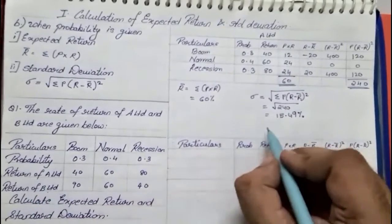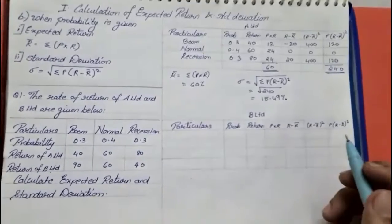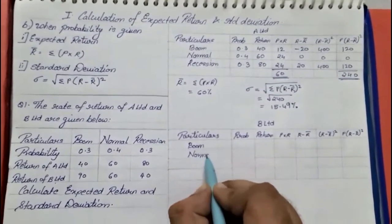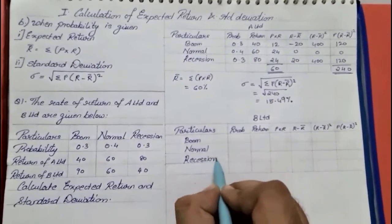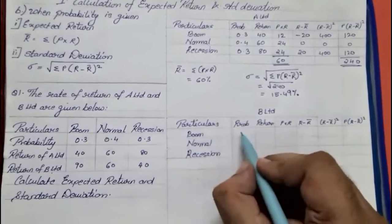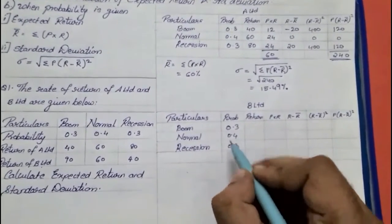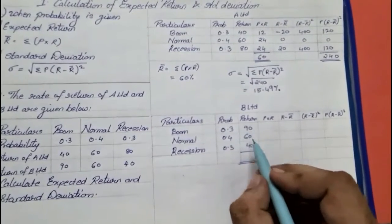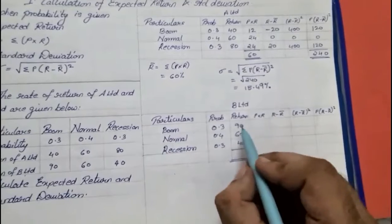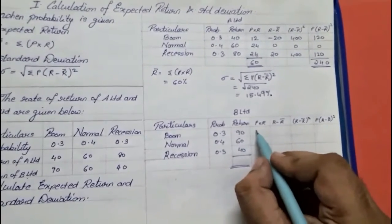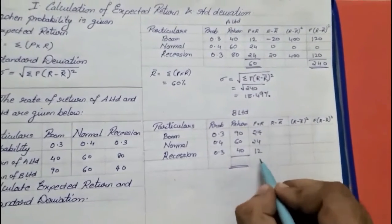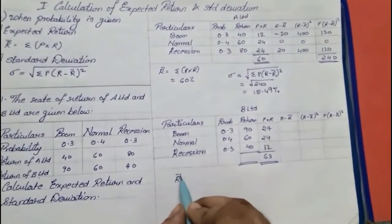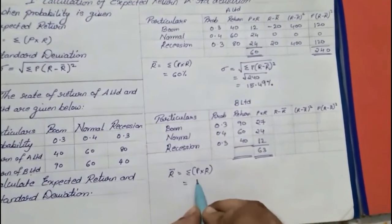Similarly we will now go for B Limited. Again the three conditions are boom, normal, and recession. The probabilities are 0.3, 0.4, and 0.3. The returns are 90, 60, and 40. We multiply: 0.3 × 90 = 27, 0.4 × 60 = 24, and 0.3 × 40 = 12. The total of p × r comes to 63. So the expected return is Σ(p × r) = 63%.